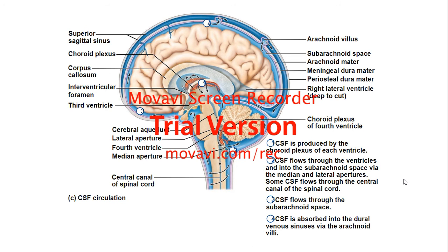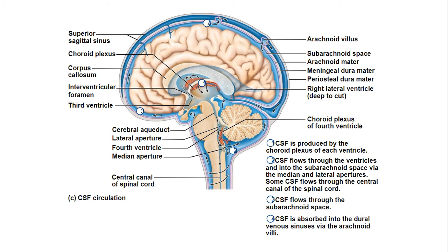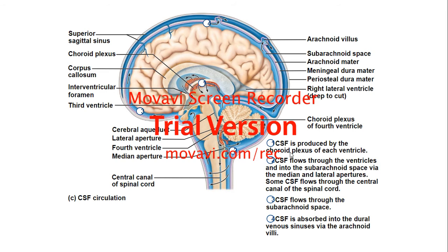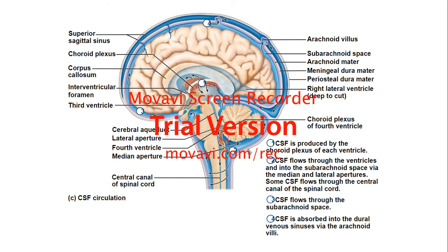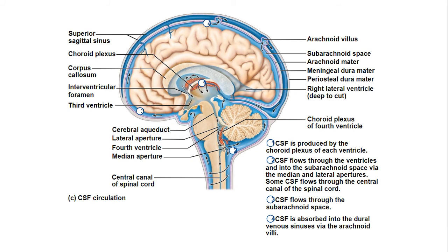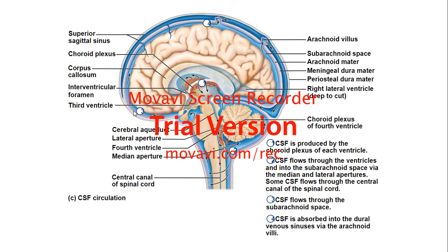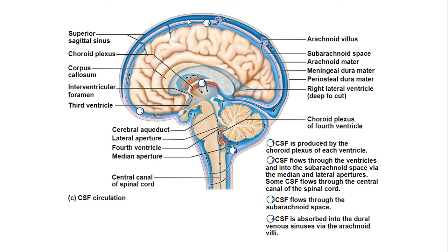This diagram shows the cerebrospinal fluid circulation in steps. Step one: cerebrospinal fluid is produced by the choroid plexus of each ventricle. Step two: cerebrospinal fluid flows through the ventricles and into the subarachnoid space via the median and lateral apertures; some also flows through the central canal of the spinal cord. Step three: the cerebrospinal fluid flows through the subarachnoid space. Step four: the cerebrospinal fluid is absorbed into the durovenous sinuses via the arachnoid villi.